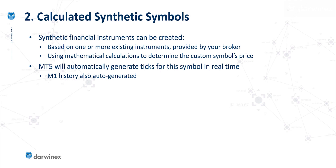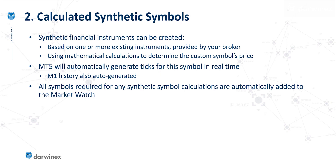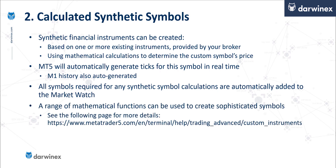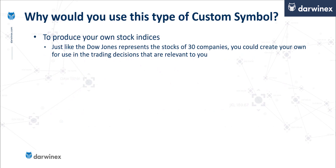Additionally, the historical past data is also calculated for the M1 bars. When custom symbols of this type are shown in the market watch window, MT5 will automatically add all of the component symbols that are used to calculate this into the market watch for you automatically, if they're not there already. If you're interested in these mathematical functions, you can find out more information about these at the provided URL.